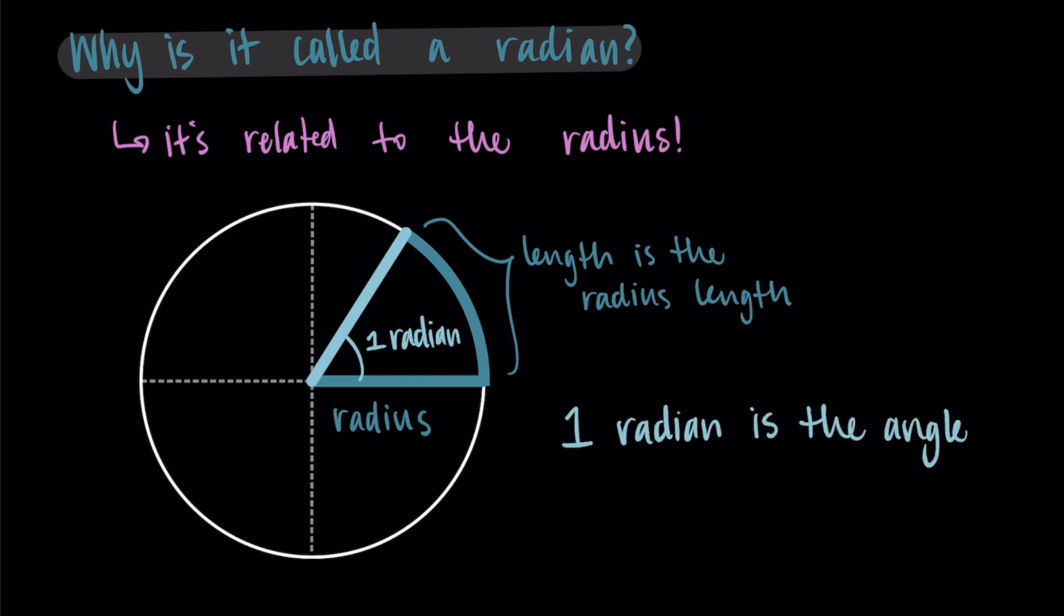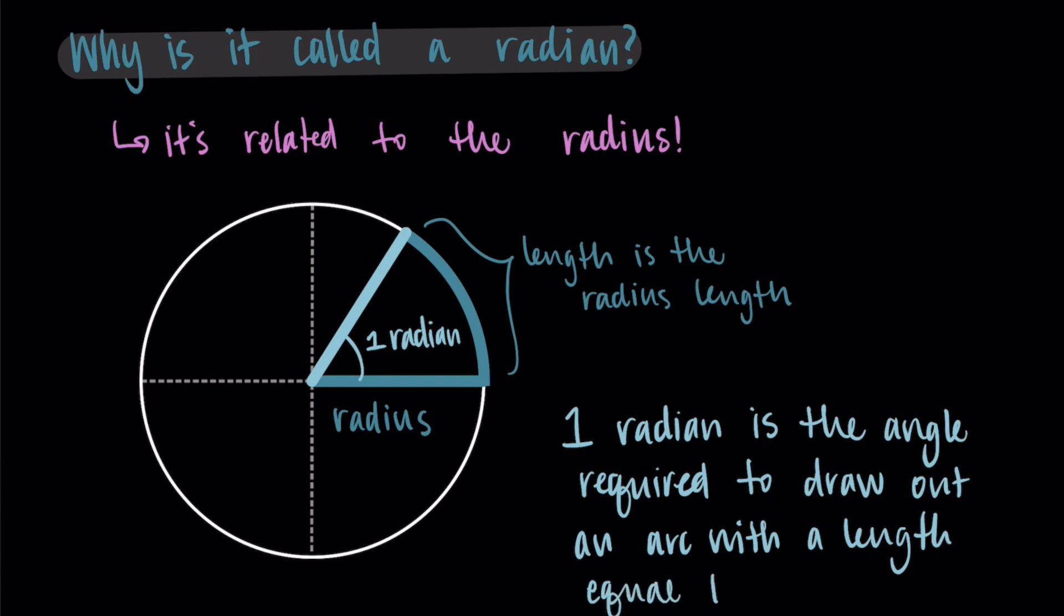So one radian is the angle required to draw out an arc with a length that is equal to the radius. So pretty cool. We take the radius, whatever that is, and we draw it out an angle that covers that much distance, and we call that one radian.